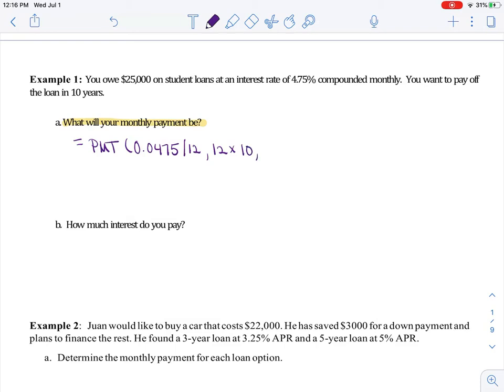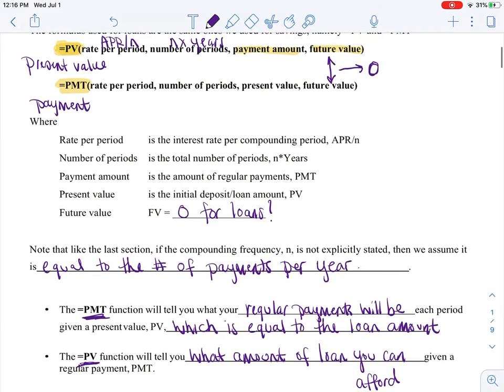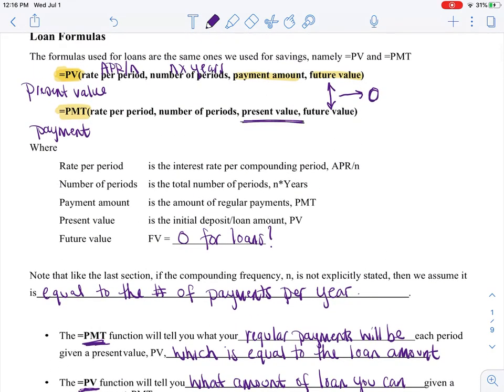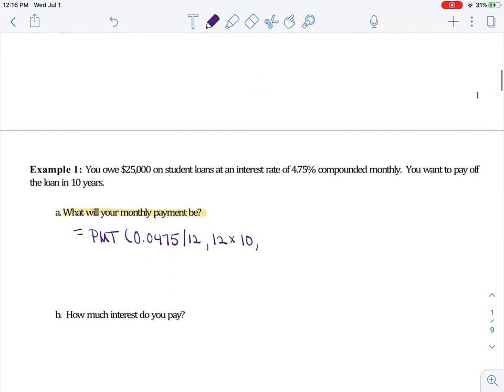And we are doing this for 10 years, and this is really important: you owe $25,000. If you go back up here, remember with our payment, that's our present value that comes next. So our present value, what we owe currently, is $25,000, but we want to get it down to zero.